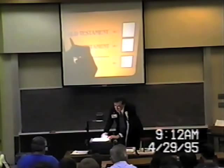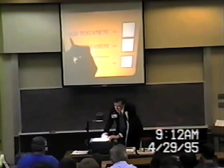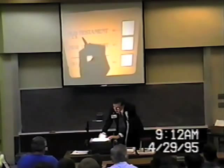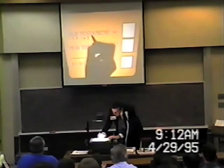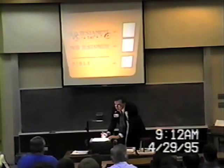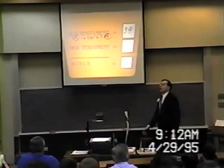Folks, it's so easy to remember. If you can just count to three — 1, 2, 3 — and count to nine — 1, 2, 3, 4, 5, 6, 7, 8, 9 — if you remember there are three letters in 'Old' and nine letters in 'Testament': 3, 9. Put the three there, put the nine there. How many books are in the Old Testament? 39. Don't ever forget that.